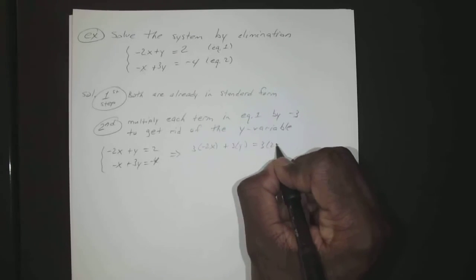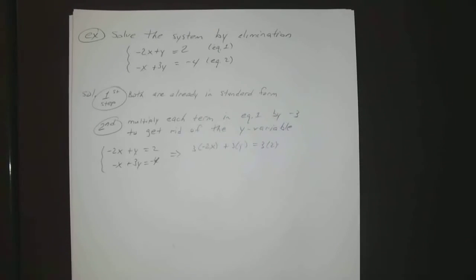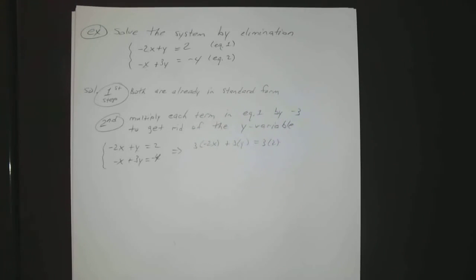Equals 3 times 2, so just each one of those terms you multiply it by 3. As long as you do the same thing to both sides, you didn't change the actual value of it, you just change how it looks.